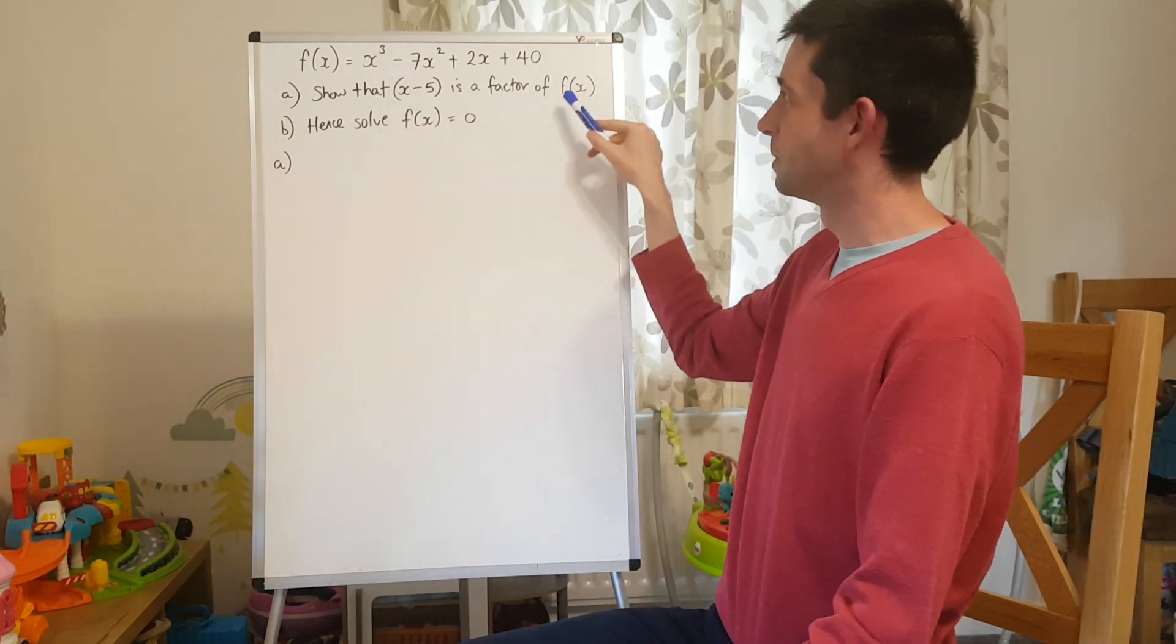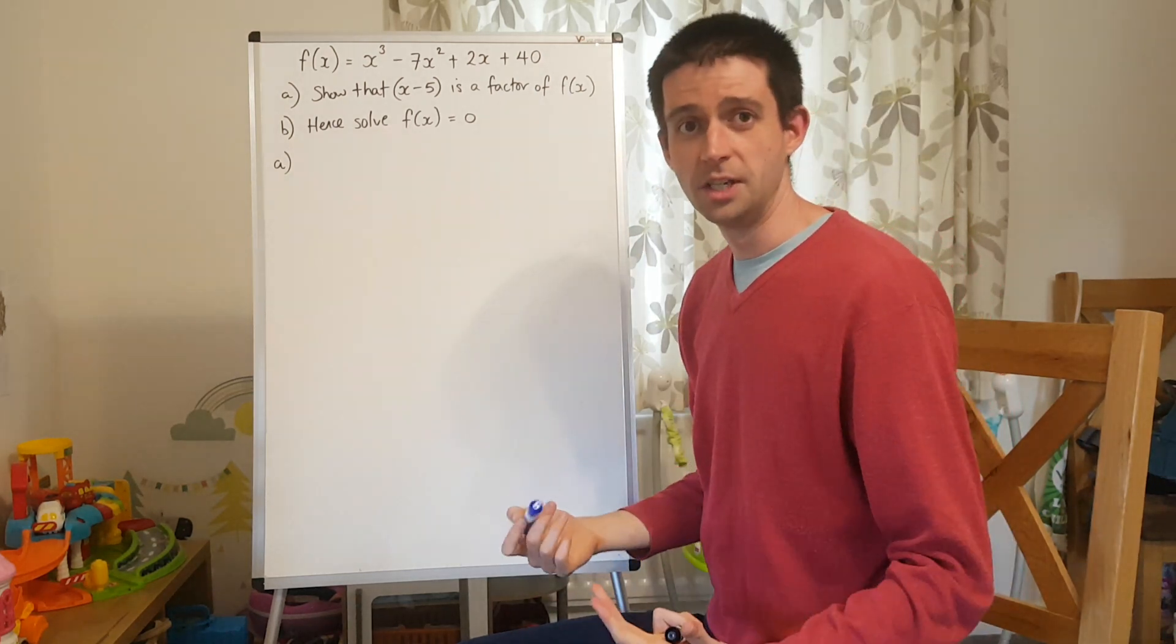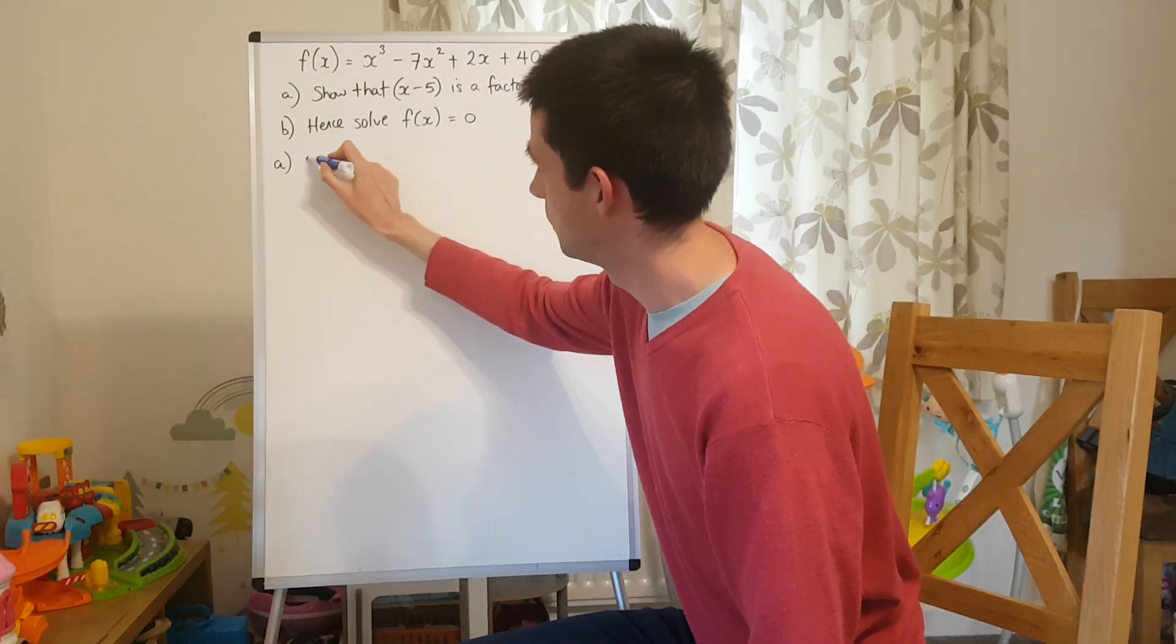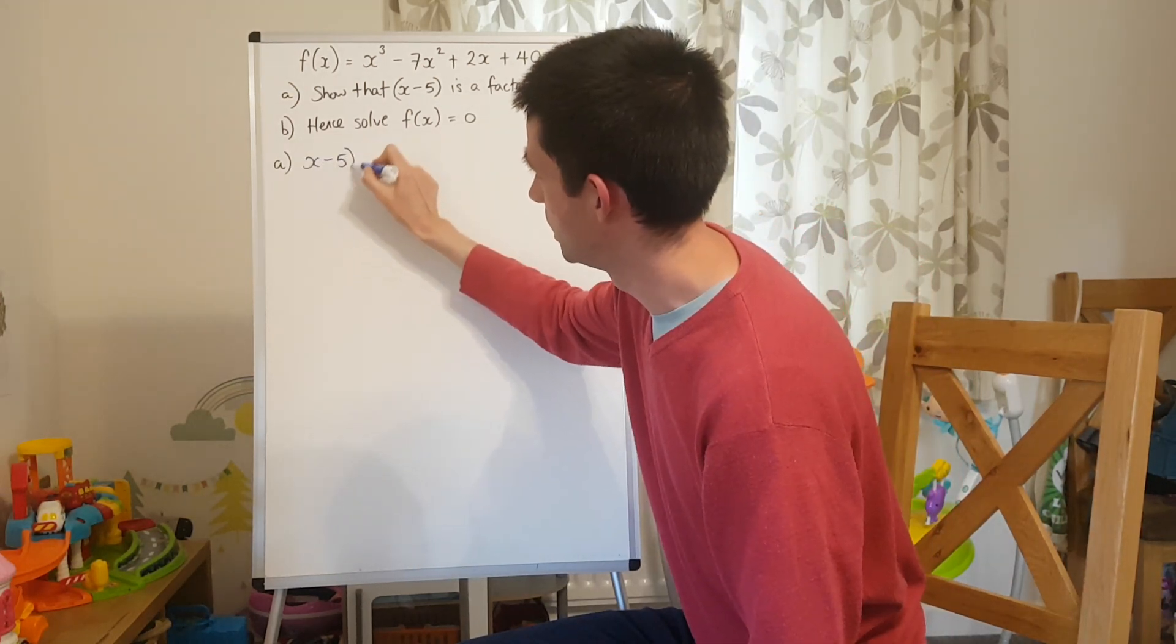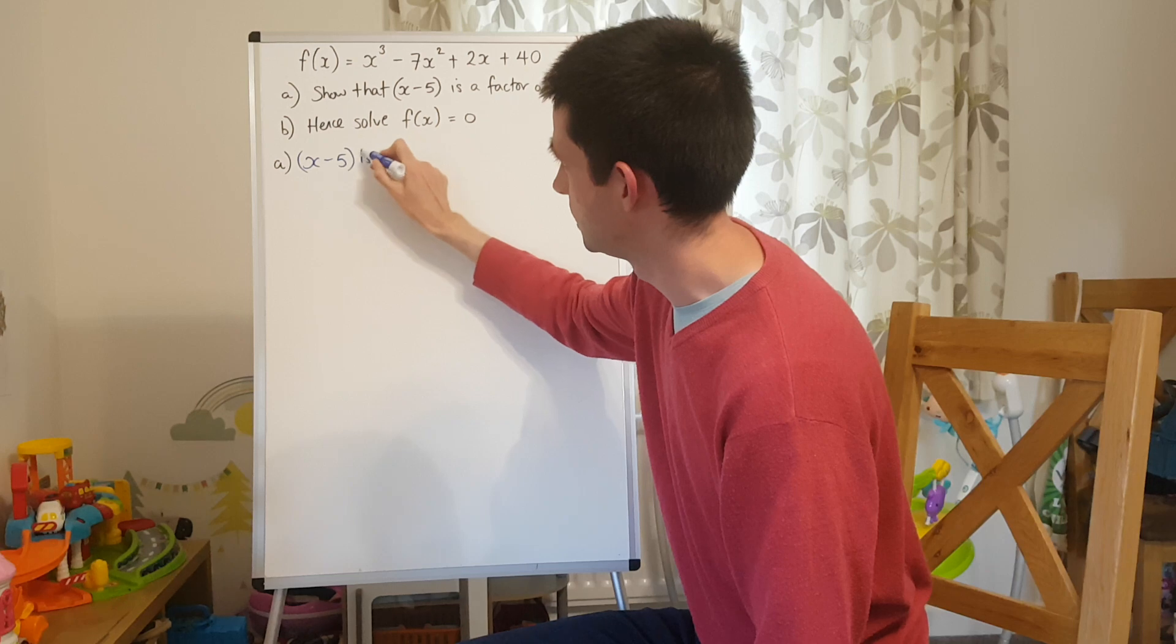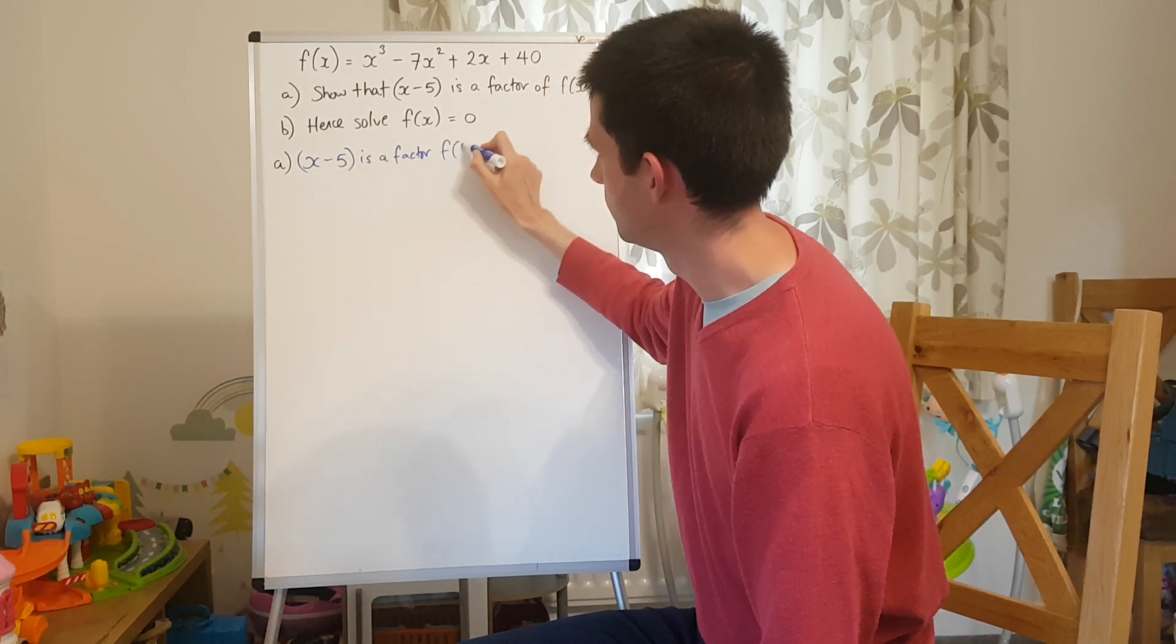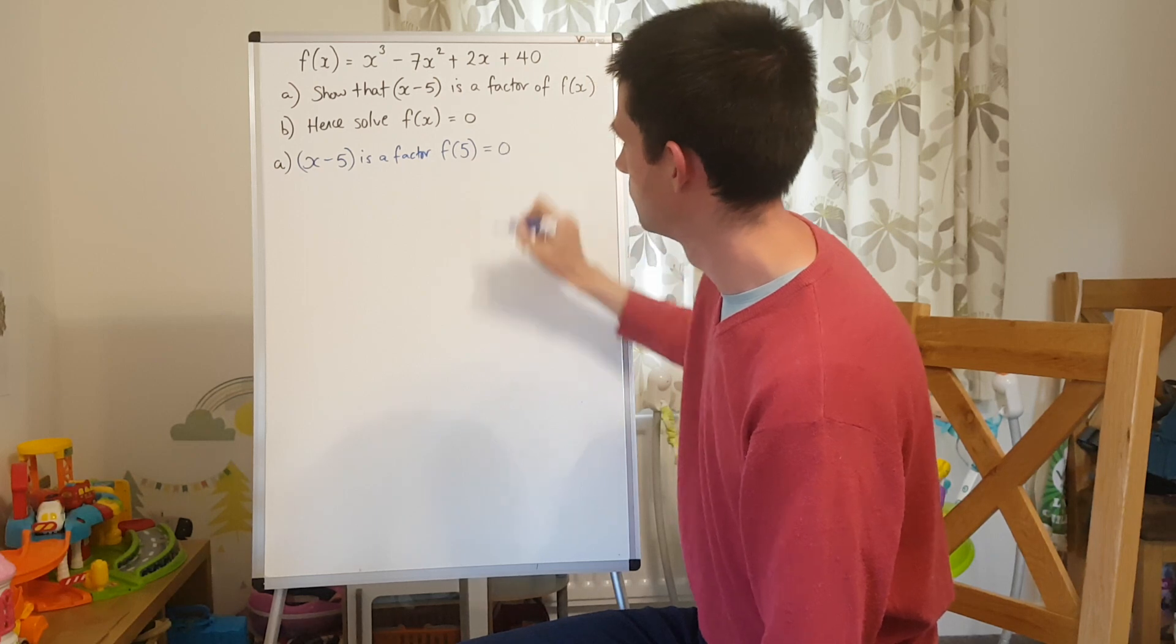So, to show that x minus 5 is a factor, I need to show that that divides into it with no remainder. So I'm going to use the Factor Theorem, so I'm going to use my knowledge that if x minus 5 is a factor, then f of 5 must equal 0.